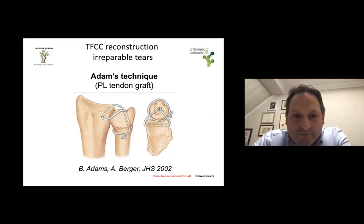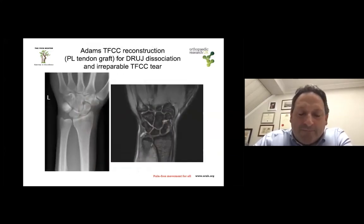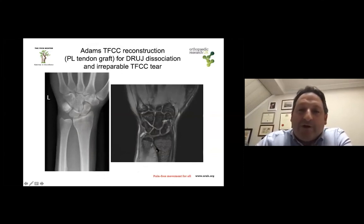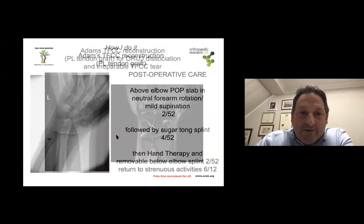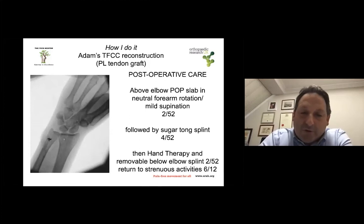Bear in mind that the palmaris longus tendon is not always very long, and it may not be possible to loop it back onto itself at the metaphysis of the ulna. Therefore, you would have to fix it by other means — bone anchors or interference screws. As you can see here, there was a distal ulnar joint dissociation also shown on MRI, and there was an irreparable bifocal tear of both the ulnar and radial components of the TFCC. Adams' technique with palmaris longus tendon graft and fixation to the ulna with bone anchors allowed restoration of DRUJ stability.